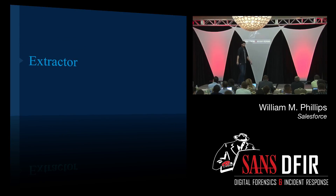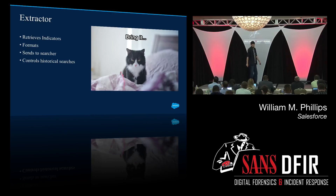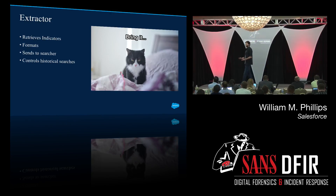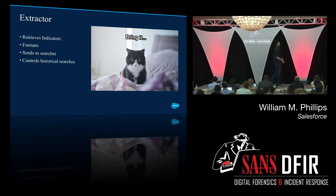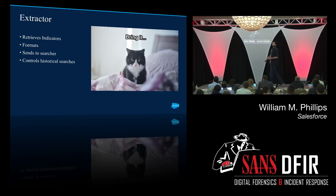The extractor. Much like a cat on the bed, it's pretty easy to extract the indicators from the repository. You're going to retrieve the indicators, format them, and send them off to the searcher. What the extractor also does is control the historical look back — because it's reaching into the repository and pulling out the indicators, it's going to say: these are the new indicators that need historical searches.